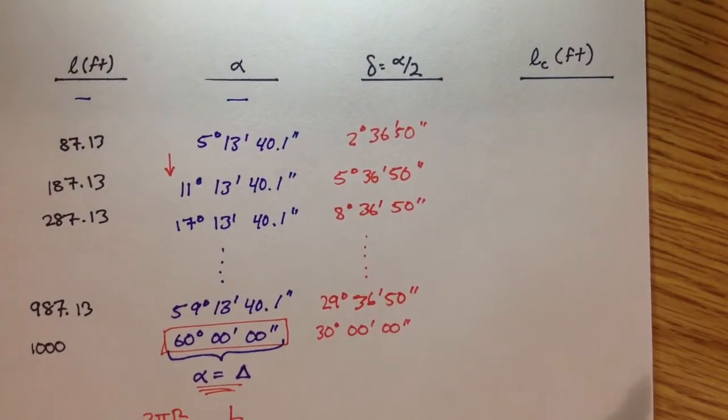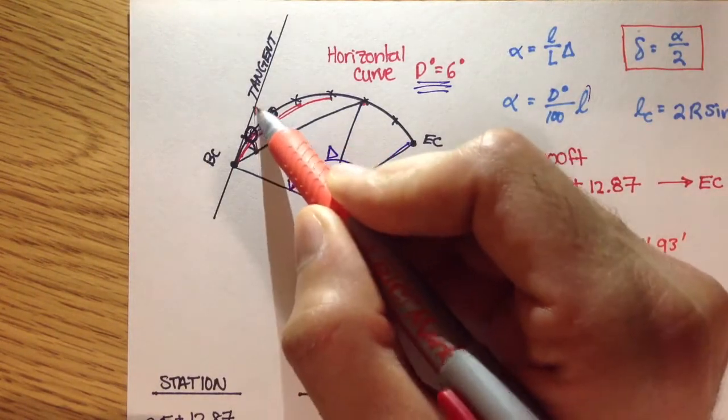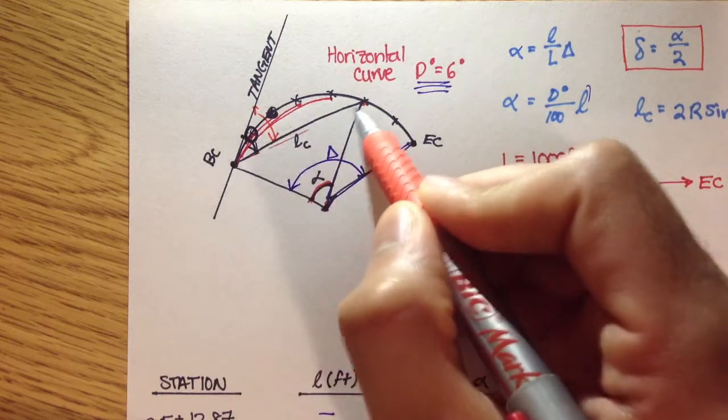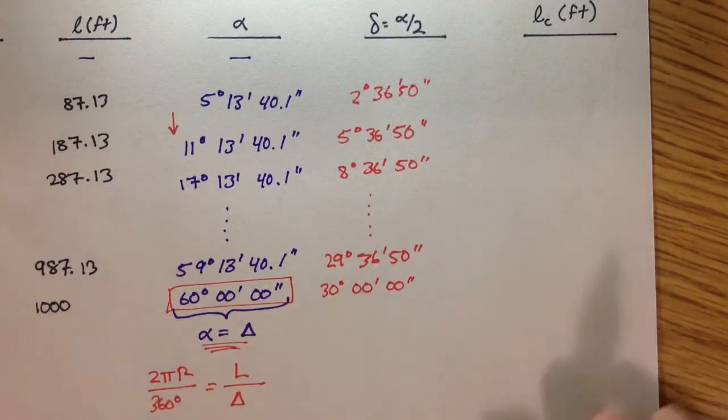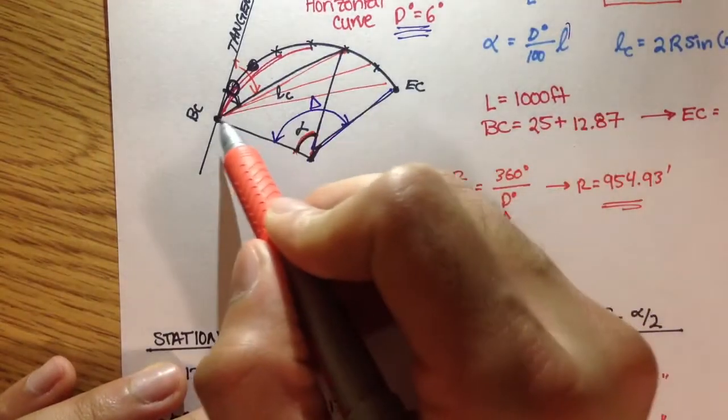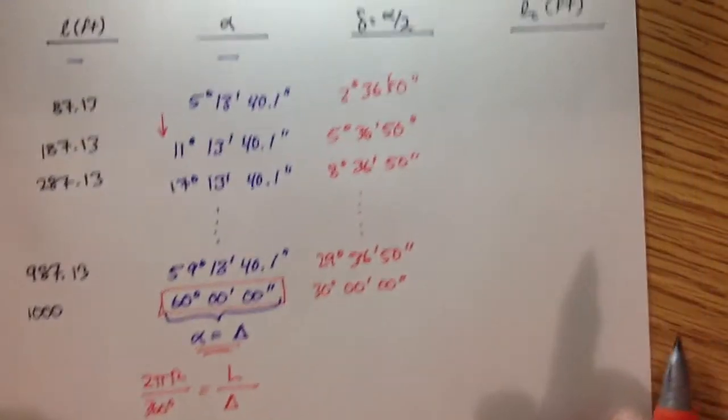So we figured out what delta is, or our deflection angle. And our deflection angle, remember, is the angle from the tangent line to the line we draw from BC to all of these points. It gives us the angle that we need to draw a chord line from BC to a point on a curve.